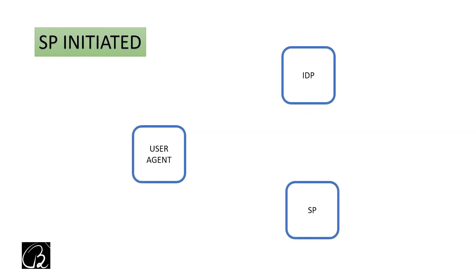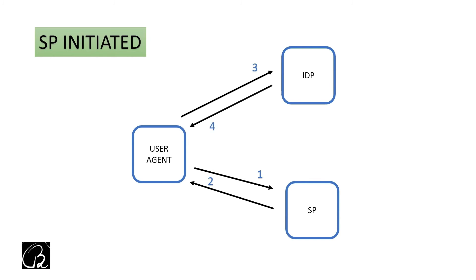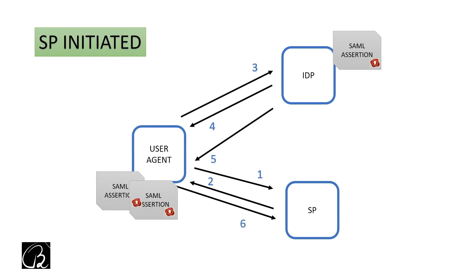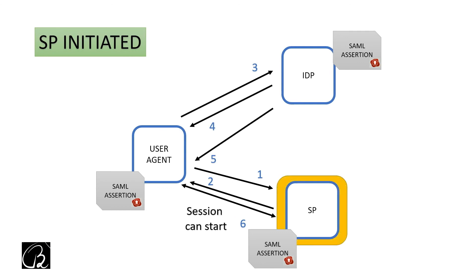In SP-initiated flow, the user first tries to access a service provider by sending a request to SP. Since the user is not authorized, SP redirects the request to IDP. IDP asks for credentials, and when the user is successfully authenticated, IDP generates a SAML assertion and sends it through the User Agent to SP. Since the user is already authenticated in IDP, no further credentials are needed and the session with SP can start.